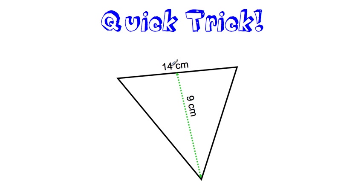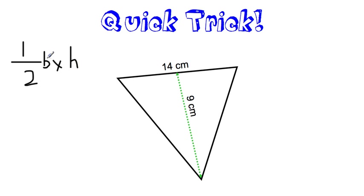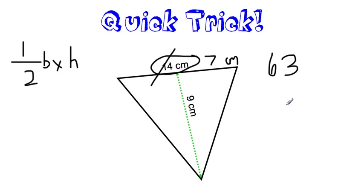Here is a quick trick that will help you when finding the area of triangles. Our formula is half of the base times the height, or base times height divided by 2. You can actually do that half step before you even start the problem. If you have an even number like 14, chop it in half to begin with — so instead of 14, just call it 7. Then multiply the height times the halved base: 9 times 7 is 63. Instead of halving at the end, you can half it at the beginning, especially if it's an even number.